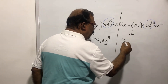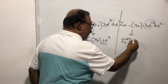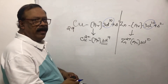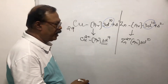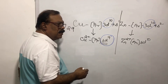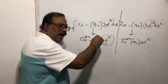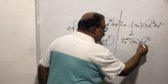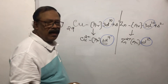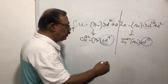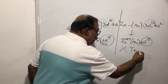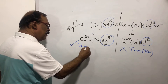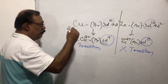Zinc forms a Zn2+ ion having the configuration argon 3d10. You can see the difference in the ionic configurations: copper 2+ has a 3d9 configuration, meaning the d-orbital is incomplete. But in zinc, as well as in the zinc ion, both have 10 electrons in the d-orbital. Therefore, zinc is not a transition element, but copper is.